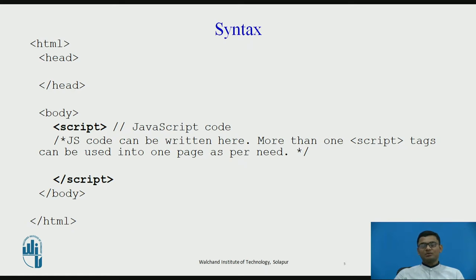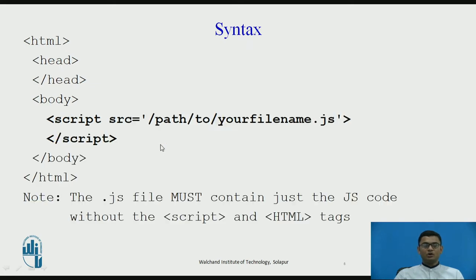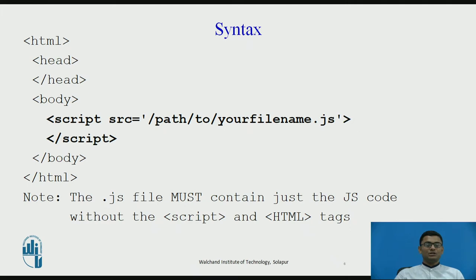Your JavaScript code can be written in the portion between the script tags that you can see here. Apart from this, if you want to write your JavaScript code in an external .js file, you can do that. In the script tag, you just need to add one attribute — src — and set the path where you have stored the .js file. These are the two ways you can use JavaScript along with your web page. The .js file must contain just the JavaScript code and not the script tags or any HTML tags.